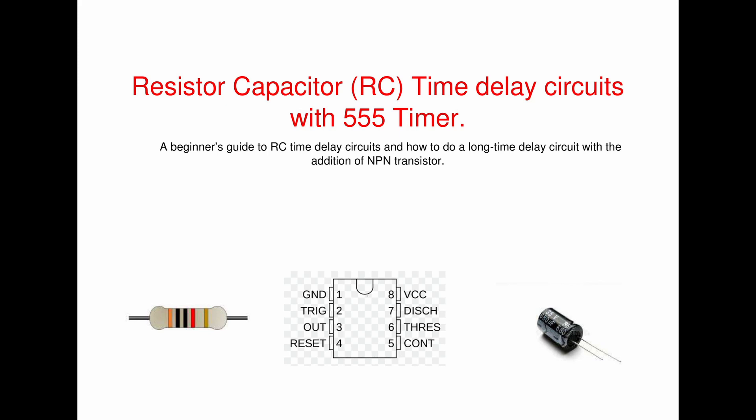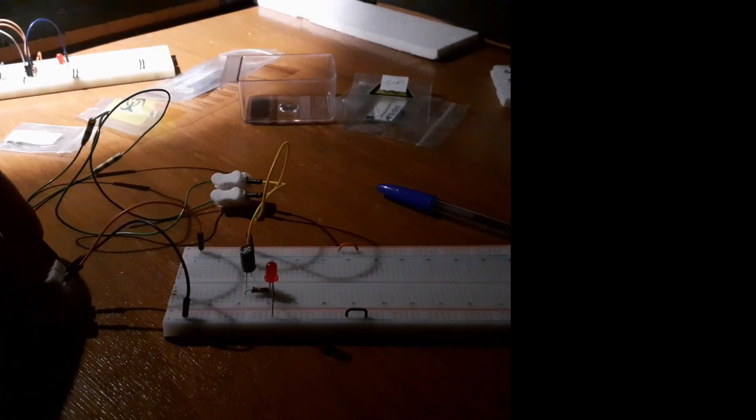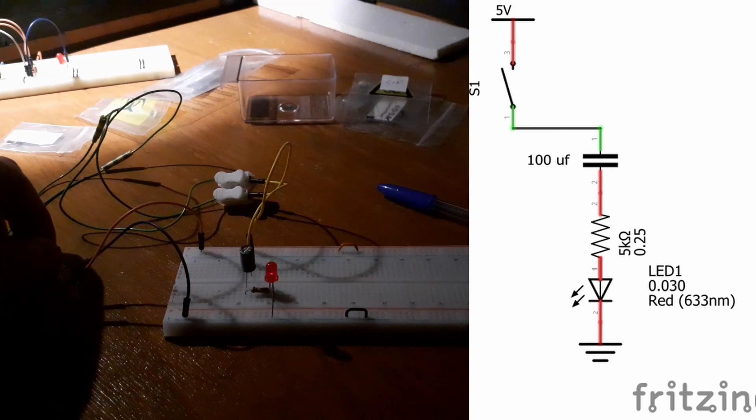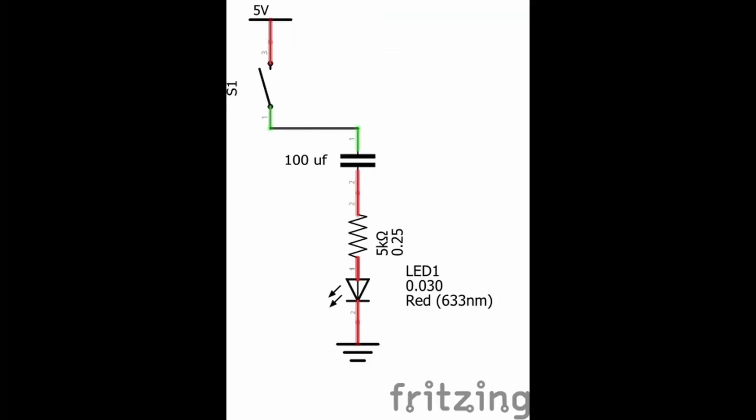First thing is that in a DC circuit, a capacitor will pass current to ground as it charges up. This first video here demonstrates this. When we close switch S1, the LED lights up immediately as current flows through the capacitor to ground. As the capacitor charges up, the current flow reduces and the LED dims until dark.